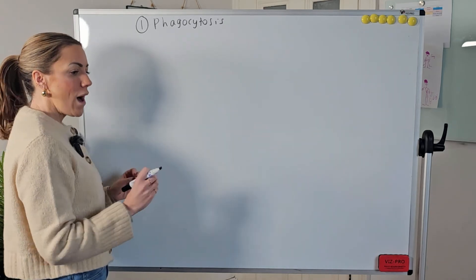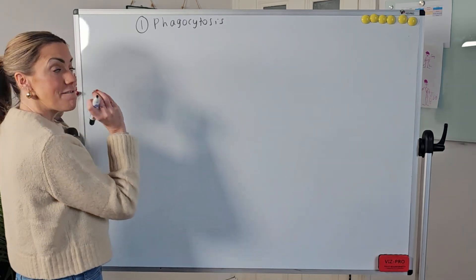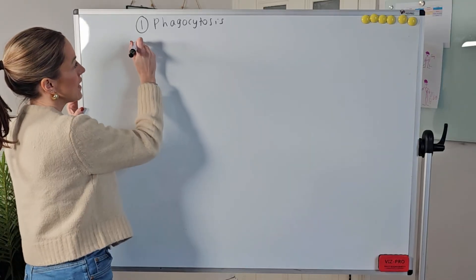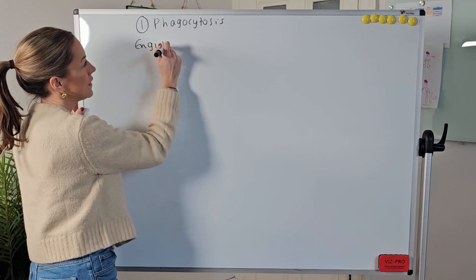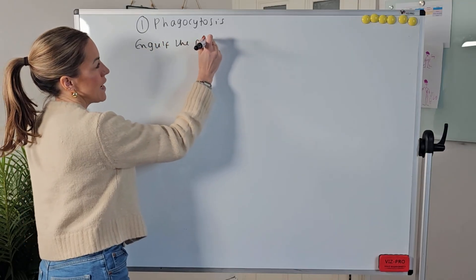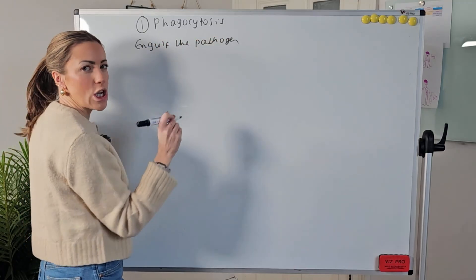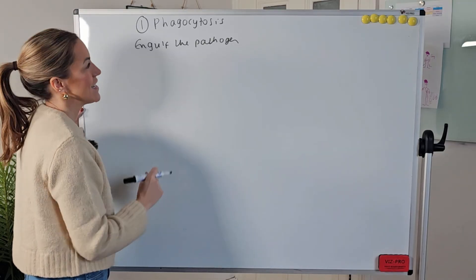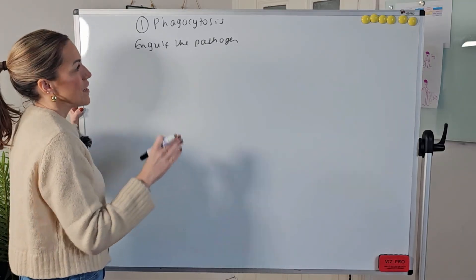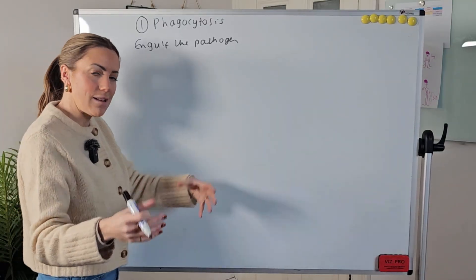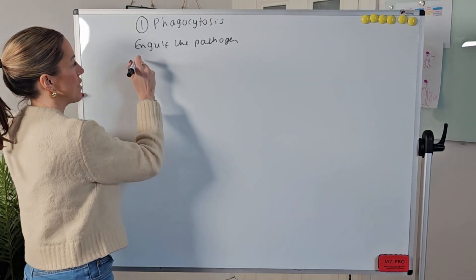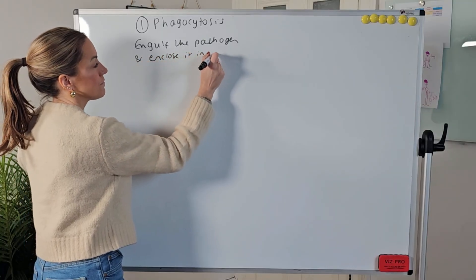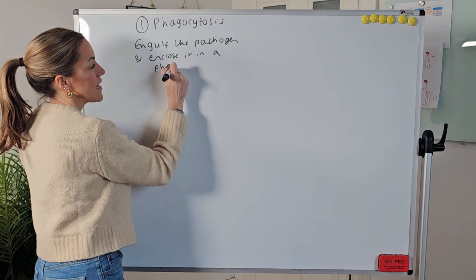So what happens in phagocytosis is that the phagocyte moves towards the pathogen. It's going to engulf the pathogen and by the way we have done a longer video on this before if you want even more detail on just this stage. We've done one of these previously but it's going to engulf the pathogen so it's going to wrap its cell surface membrane around the pathogen and enclose it in a vesicle which we can call a phagosome.